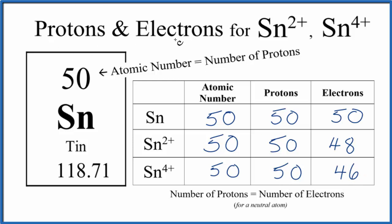So that's how you find the number of protons and electrons for the Sn2 ion, the Sn4 ion, and for neutral tin. If you need help finding the number of neutrons in the different isotopes of tin, there's a link in the description to a video that'll help you do that.